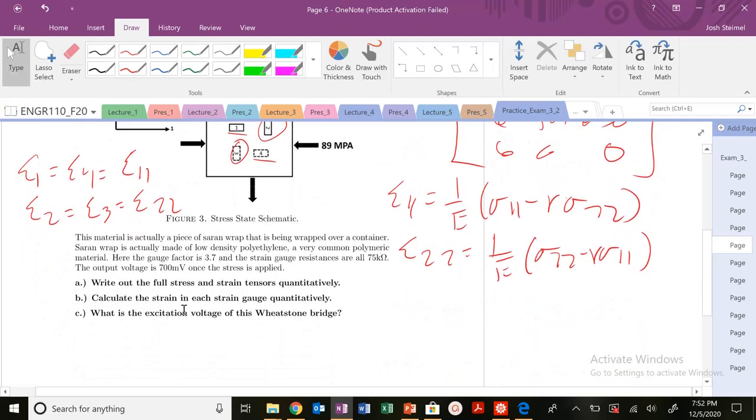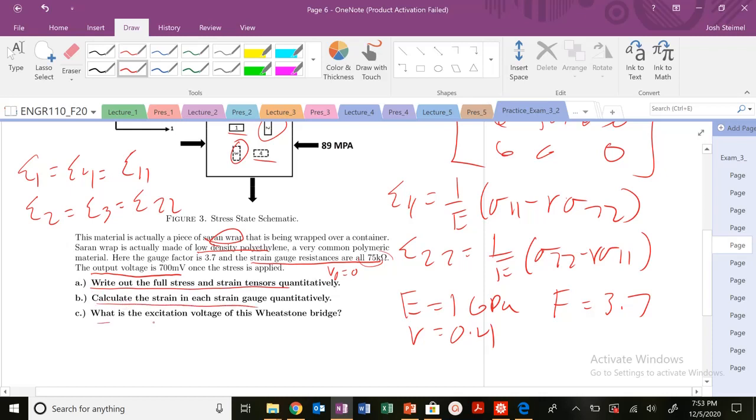All right. So let's go ahead and read our problem here. So the material is a piece of saran wrap. Saran wrap is actually made of low density polyethylene, so polymer. So I know that its modulus is 1 GPa, approximately. Nu is equal to 0.4. My gauge factor, F, is equal to 3.7. The strain gauge resistances are all this. So I know if my resistances are all equal, I know that my initial voltage at balance was equal to 0 volts. And the output voltage is 700 millivolts once the stress is applied.